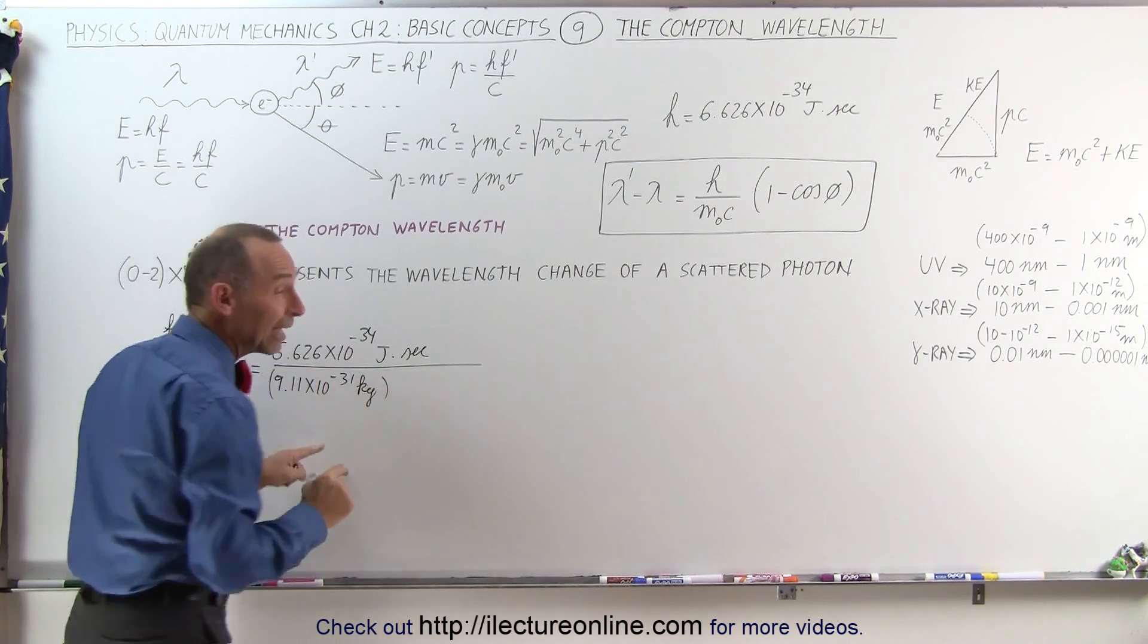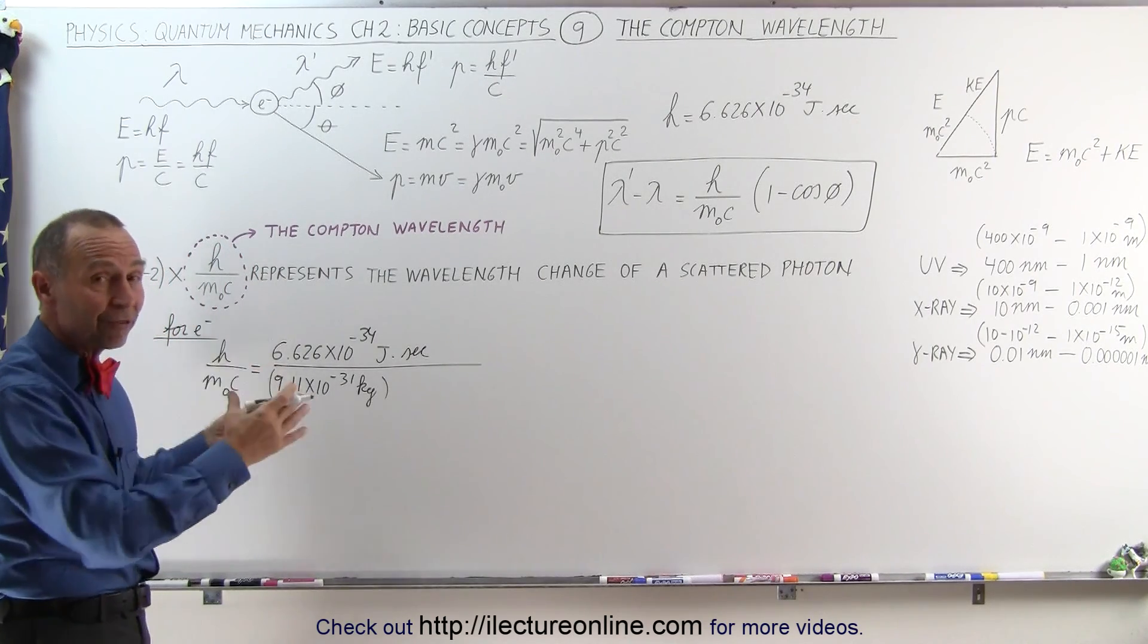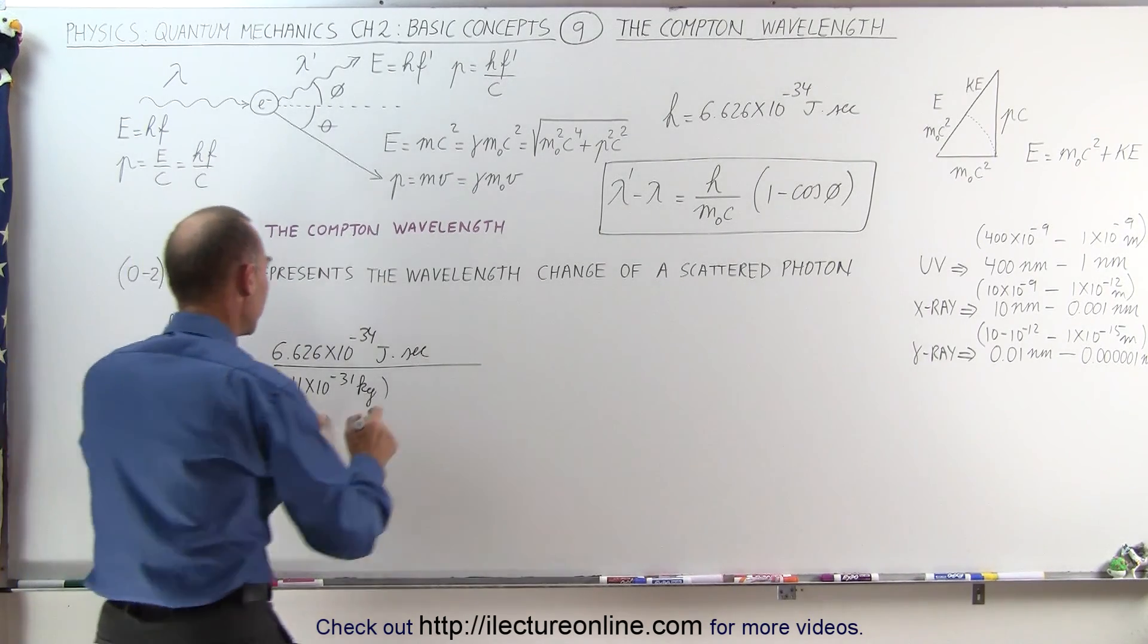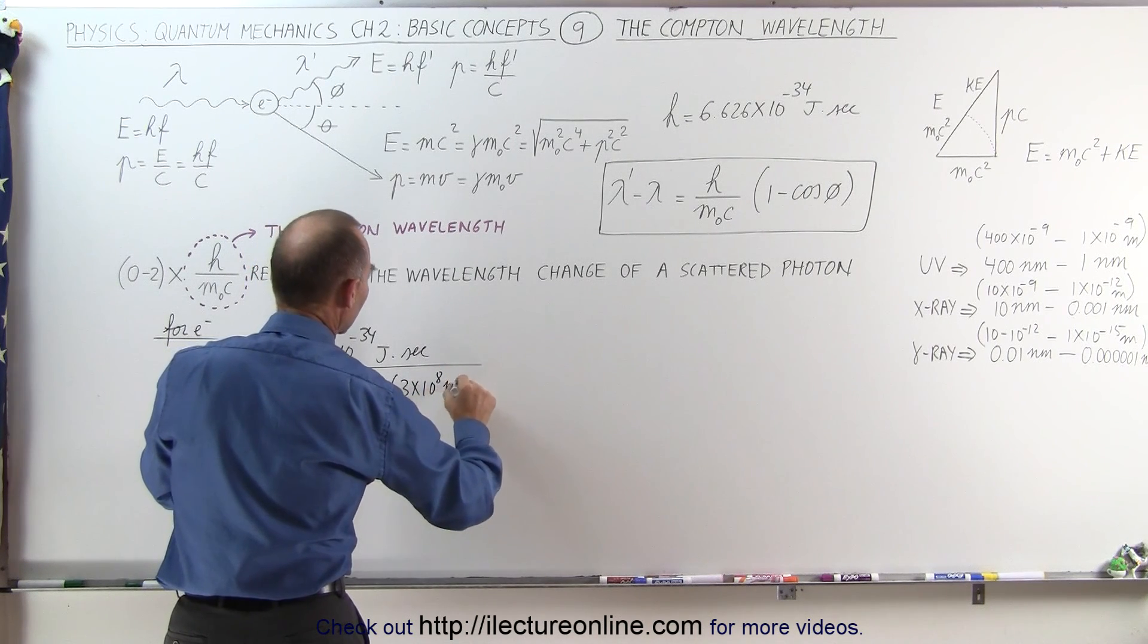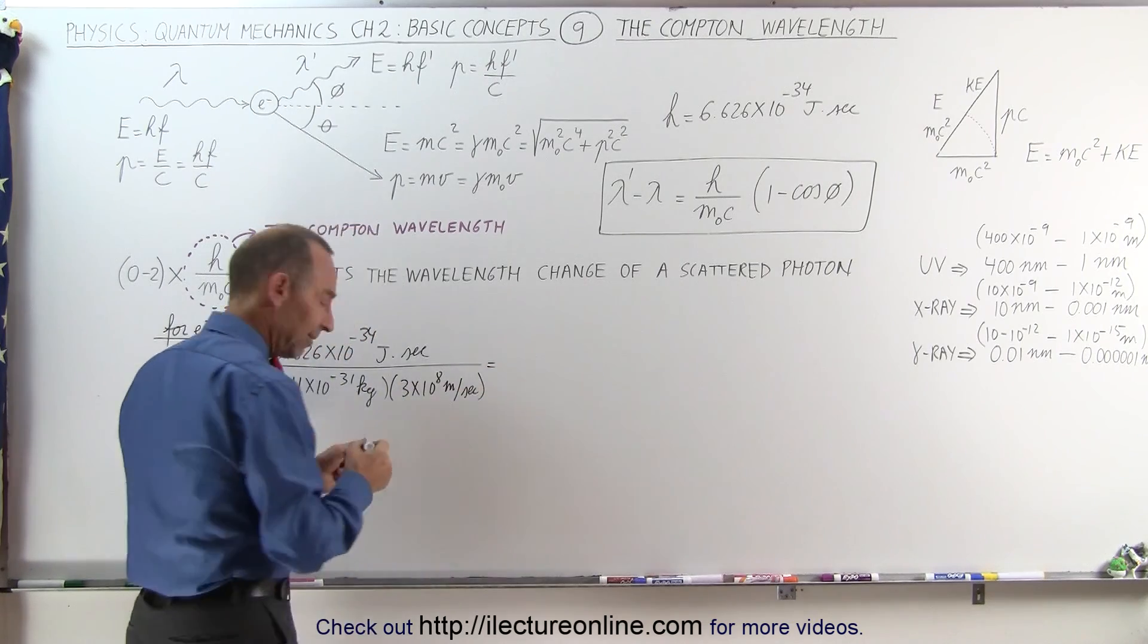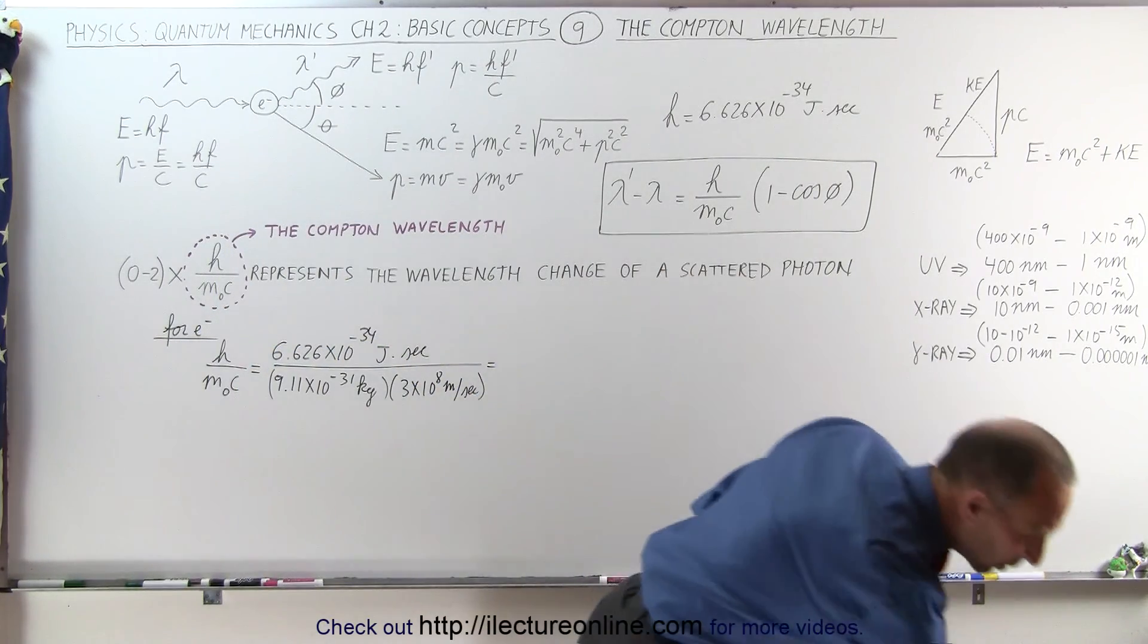And then we'll do this again with the mass of a proton and see how different the change in the wavelength will be. And then multiply times 3 times 10 to the 8 meters per second, which is close enough to the speed of light. So let's see with the calculator what that is equal to.